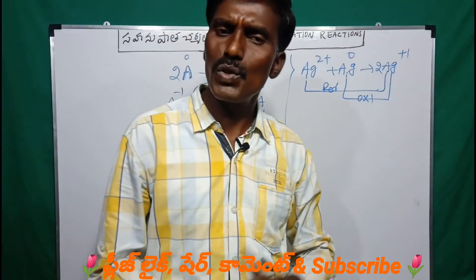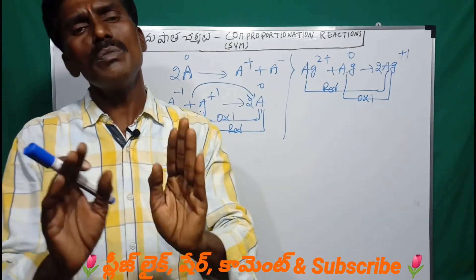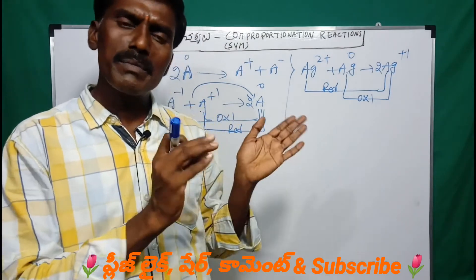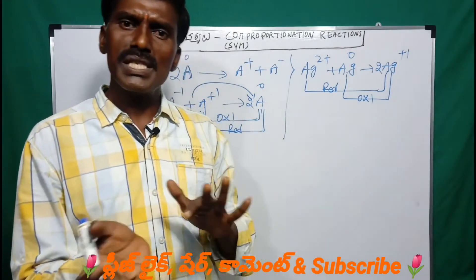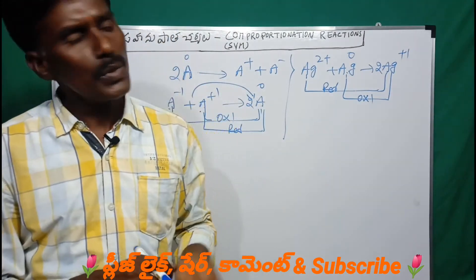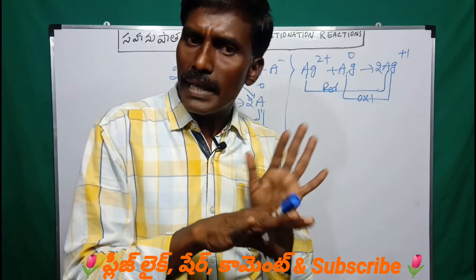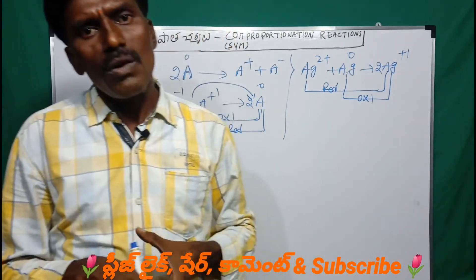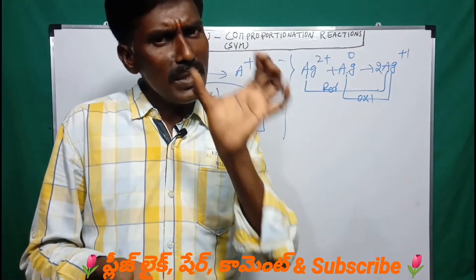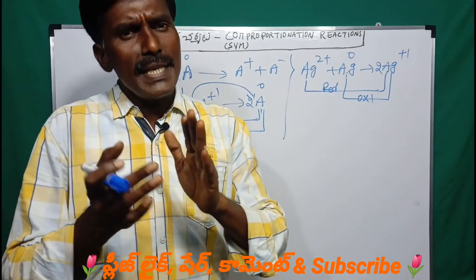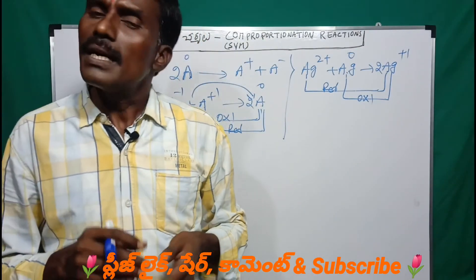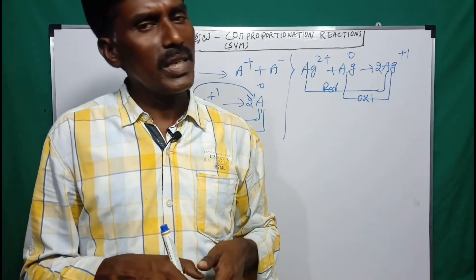So those are symproportionation reactions and their terms. If you understand the concept, you can identify any disproportionation or comproportionation reactions in chemistry clearly. In the next class, we will start stoichiometry. Thank you.